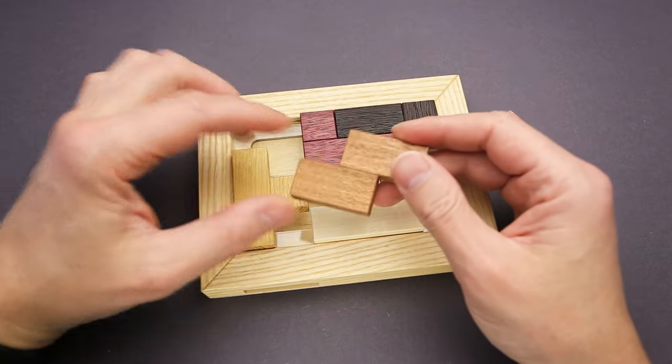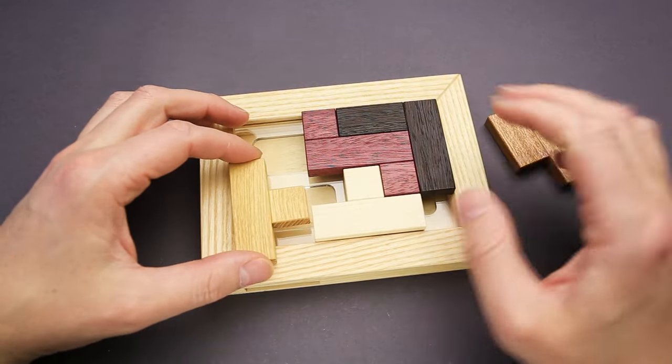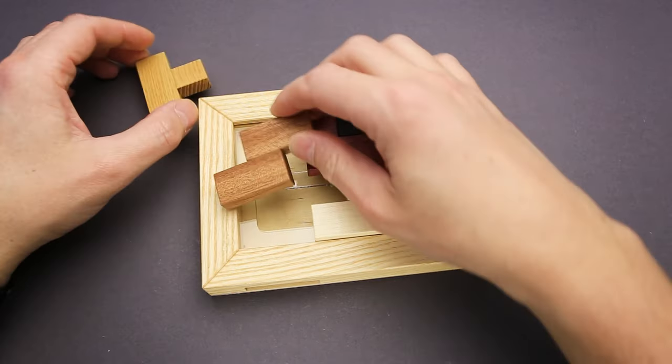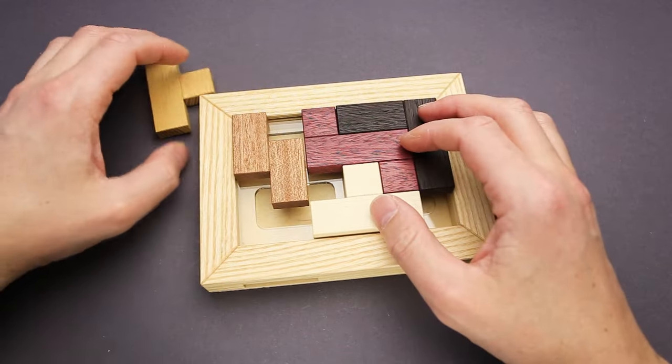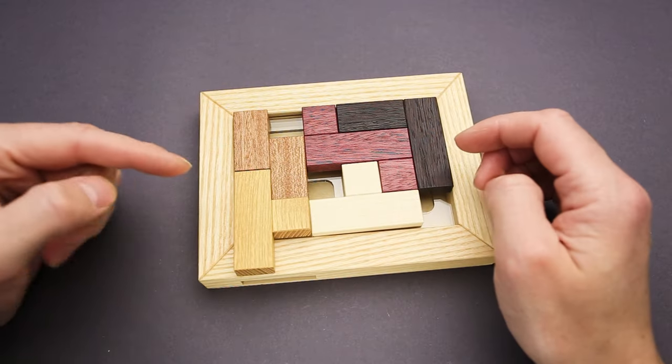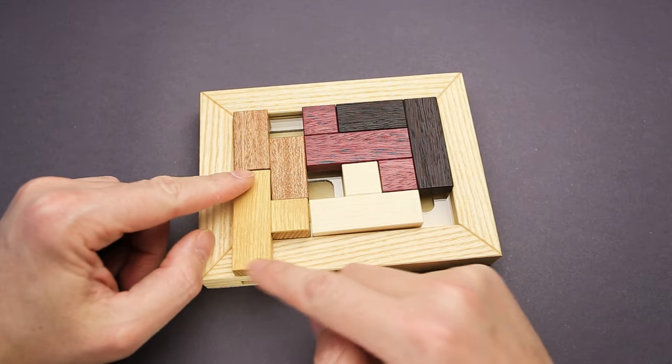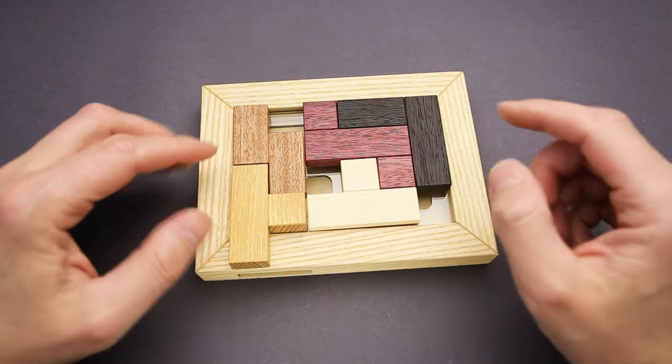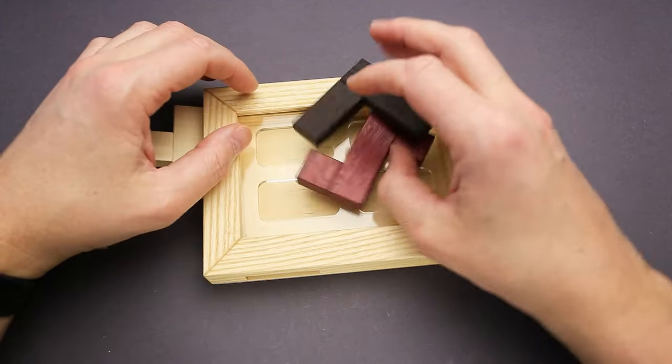There is one piece that is kind of extra. If I remove it, I will be able to solve the puzzle, but I still have to find a way how to fit all five parts inside. Yeah, this will work, but this part will be inside of this opening, which is not allowed. All parts are supposed to be within the frame. Okay, I'll keep looking.